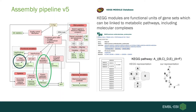Moving on to the assembly pipeline — this is an extension of the raw reads pipeline, which already includes Pfam and KEGG annotations. We don't provide motus for assemblies. With assemblies we have more contiguous sequences, potentially more complete genes, and in theory each contig refers to one genome or one species. This allows us to make pathway-level annotations: after getting KEGG ortholog annotations we perform a pathway annotation by looking at KEGG modules, assigning modules depending on the orthologs present. KEGG modules are functional units of gene sets which can be linked to metabolic pathways.